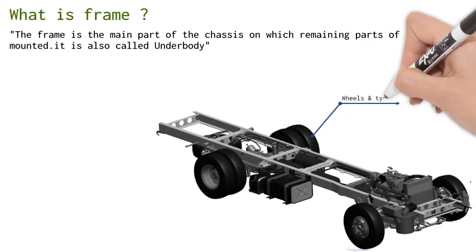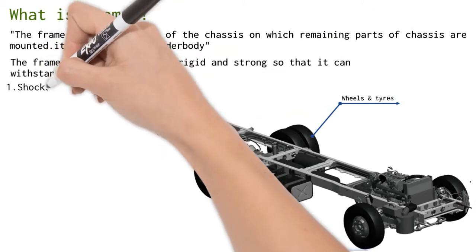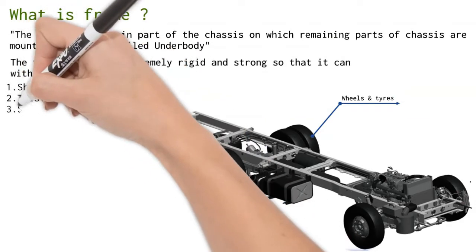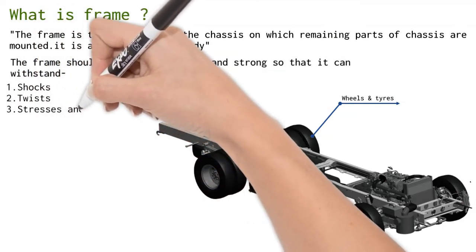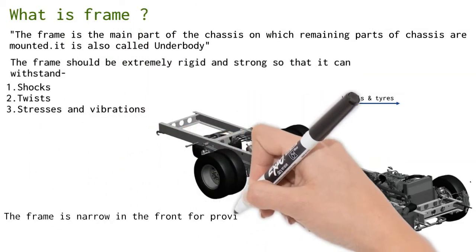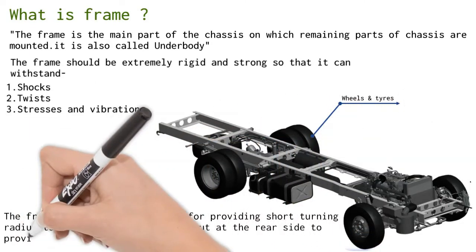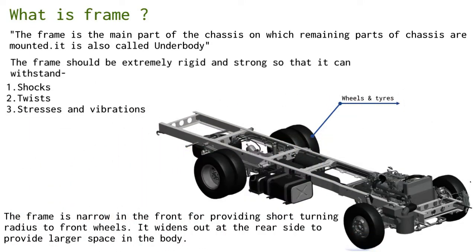The frame should be extremely rigid and strong so that it can withstand shocks, twists, stresses, and vibrations to which it is subjected while the vehicle is moving on the road. The frame is narrow in the front end for providing short turning radius to front wheels. It widens out at the rear side to provide larger space in the body.